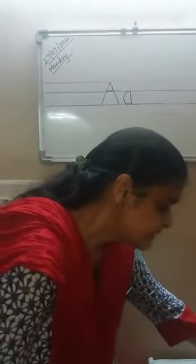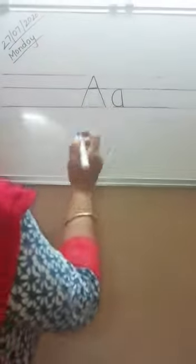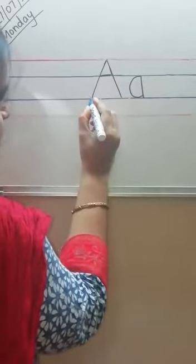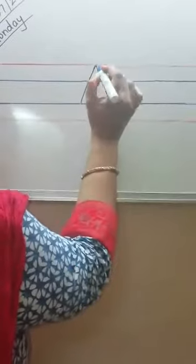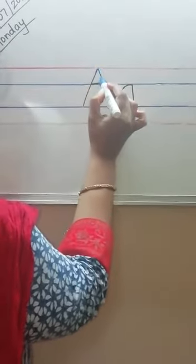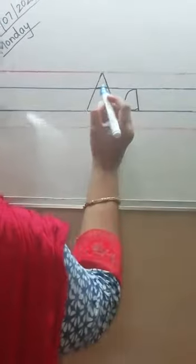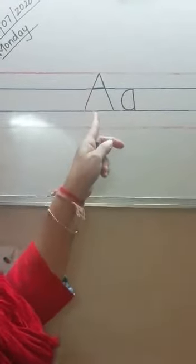Now we will see how to write the letter A and its sound. This is capital A. We will start from the red line — can you see this red line? You have to start from here and go down to the second blue line. Then again come up and go down to the second blue line, and then make a sleeping line. This is capital A.